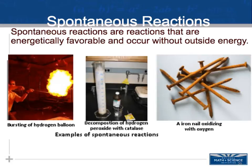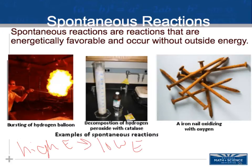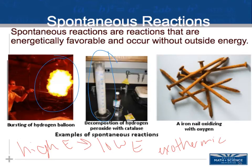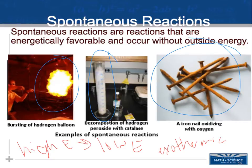Spontaneous reactions are energetically favorable and don't require an input of outside energy to make them happen. Systems in general move from high energy to low energy, dictating these spontaneous reactions. Spontaneous reactions are usually exothermic — releasing heat. Examples include a hydrogen balloon bursting, hydrogen peroxide mixed with catalase in your enzyme lab, and oxidation or rusting — the exposure of iron to oxygen is slow but still a spontaneous process.